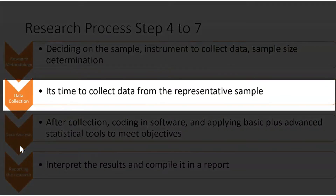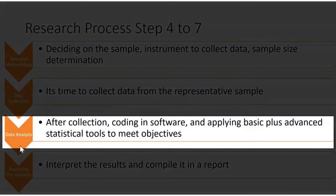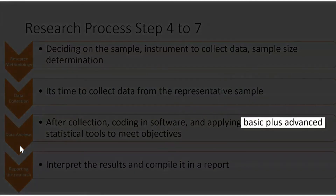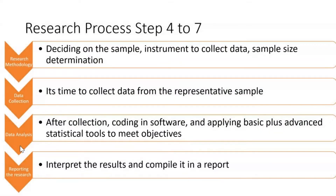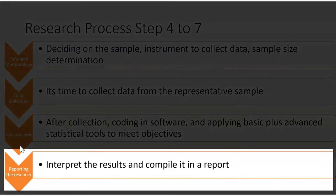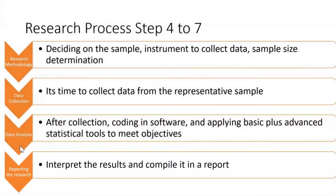In the next step, we start collecting data from the representative sample chosen in step four. After collecting data, in the next step we code all that data into a software — that could be SPSS, SAS, Python, or R. Then you apply basic as well as advanced statistical analysis on your data to meet your objectives. It will depend on the objectives to determine what statistical tools to use. In step seven, the last step, you interpret the results given by the software and compile them into a report. In this way, any company or individual can conduct research based on these seven steps.